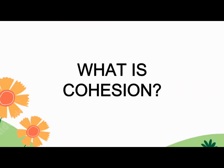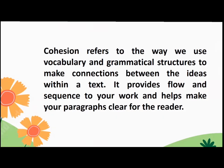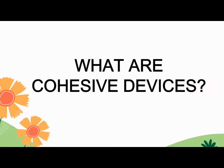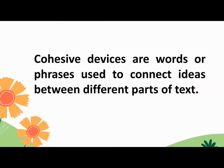After answering the pretest, let us now move on to the lesson for today. What is cohesion? Cohesion refers to the way we use vocabulary and grammatical structures to make connections between the ideas within a text. It provides flow and sequence to your work and helps make your paragraphs clear for the reader. In order to achieve cohesion, we need to use cohesive devices. Cohesive devices are words or phrases used to connect ideas between different parts of text.